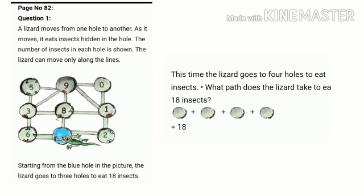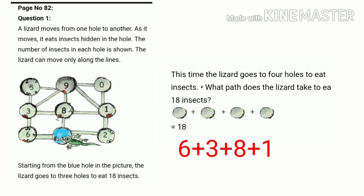Now the next question: this time the lizard goes to 4 holes to eat insects. What path does the lizard take to eat 18 insects? 4 holes, total 18 insects — which path will it take? The lizard will start from 6, then go to 3, 8, and 1. So 6 plus 3 plus 8 plus 1 gives a total of 18.